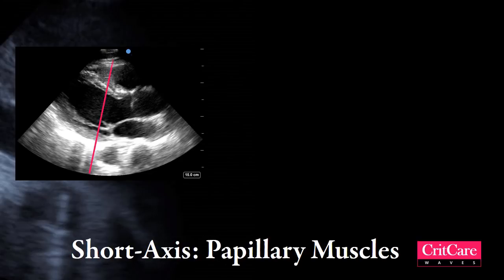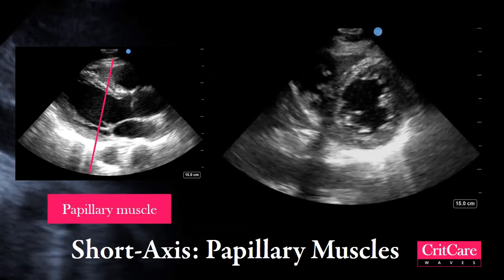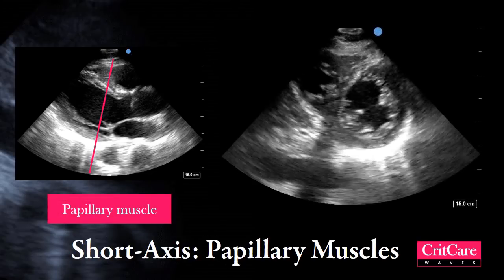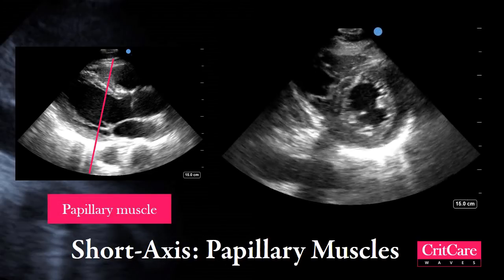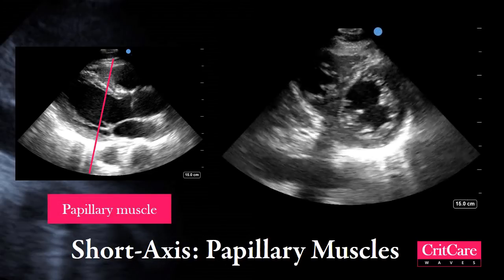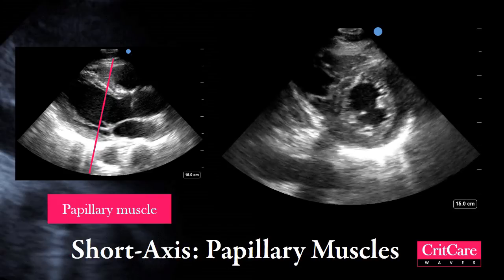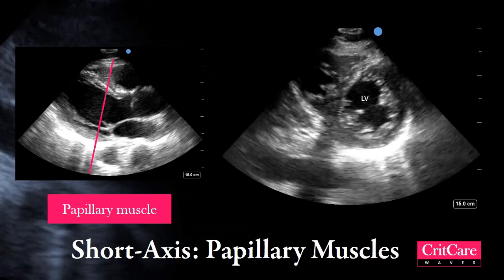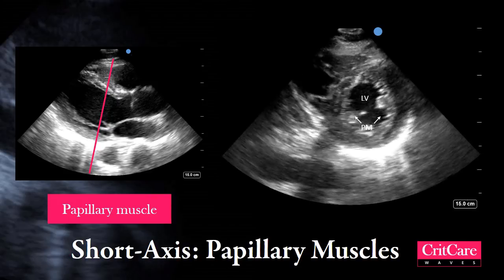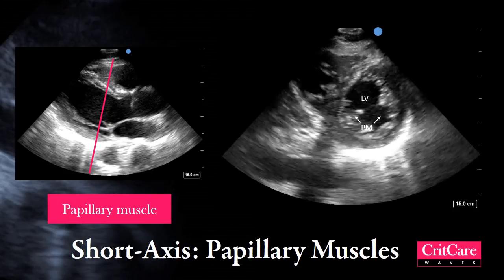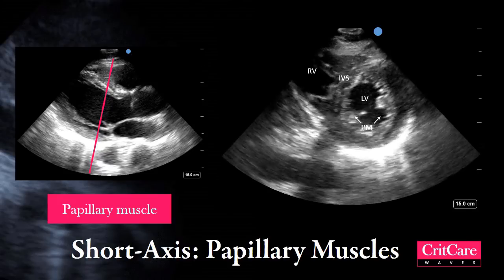The first view is the parasternal short axis at the level of the papillary muscles. The thick-walled left ventricle is apparent, as well as the papillary muscles. The right ventricle is by its side with the interventricular septum in between.